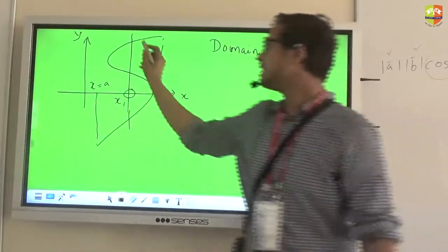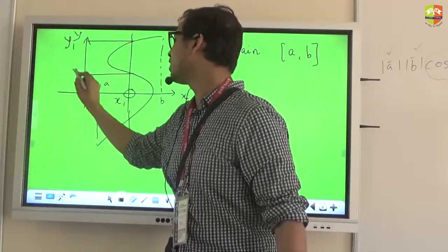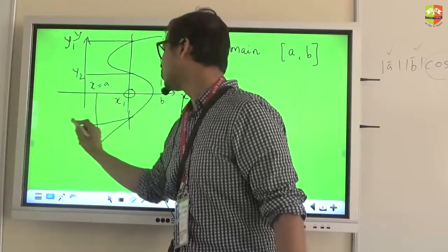If I draw a vertical line like this, for a particular value of x, let's say x1, I am getting multiple outputs. I am getting multiple answers: y1, y2, y3.